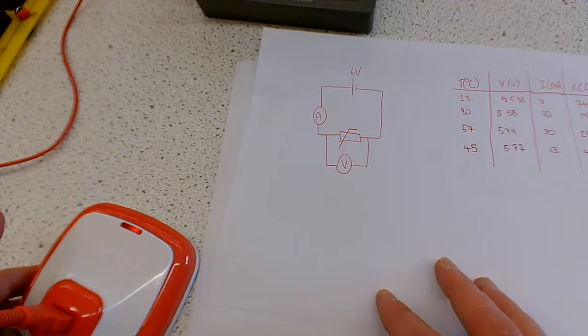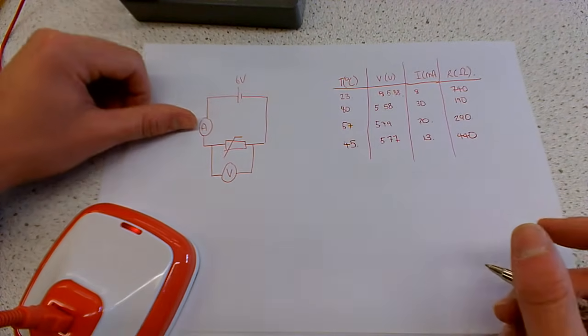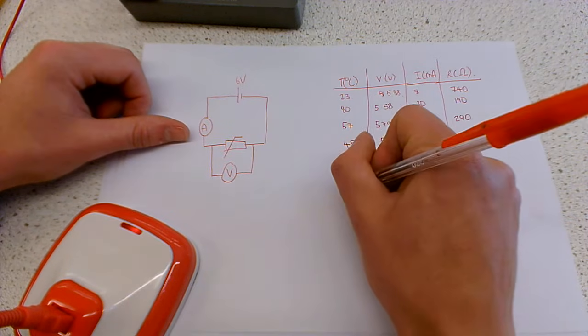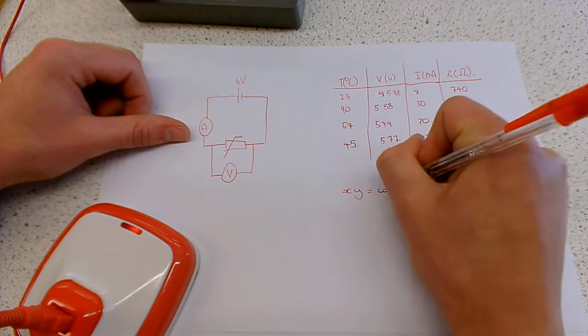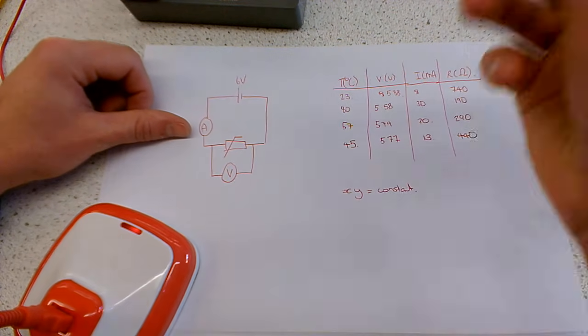And the calculation that we will do is, if two things are inversely proportional, let's call them x and y. If we multiply them together, that should give us a constant.